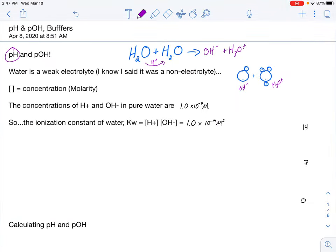Now, how many ions do I actually have in the solution? If it's a weak electrolyte, I shouldn't have a lot, and it's a known value. It's something we can calculate. The concentration of hydrogen ions and hydroxide ions in pure water is this value right here: 1.0 times 10 to the negative 7th molarity. Very, very small.